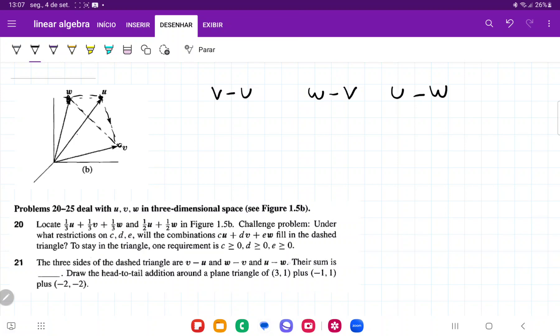And then it's asking us what their sum is. So if we add these, what is going to happen? Well, minus u and plus u, these are going to cancel, minus v and plus v, these are going to cancel, and w and minus w, this is going to cancel. So if we add all of this, it's just going to give us the zero vector.